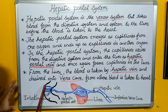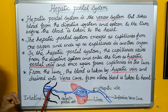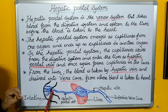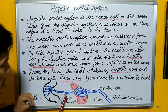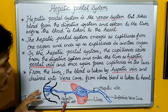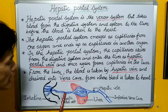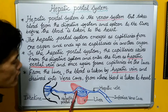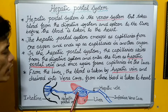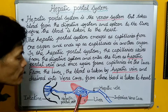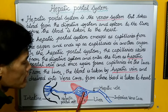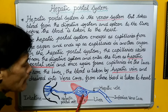These capillaries form a hepatic portal vein, and this hepatic portal vein ultimately enters into the liver where once again it breaks up into capillaries — these are capillaries within the liver.